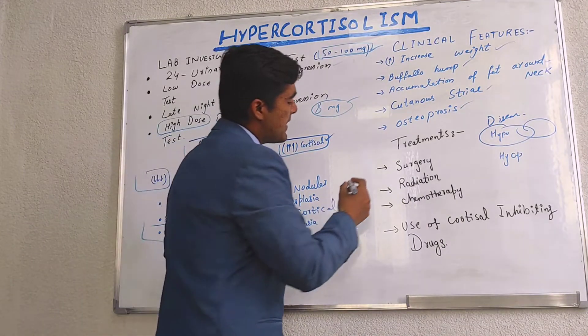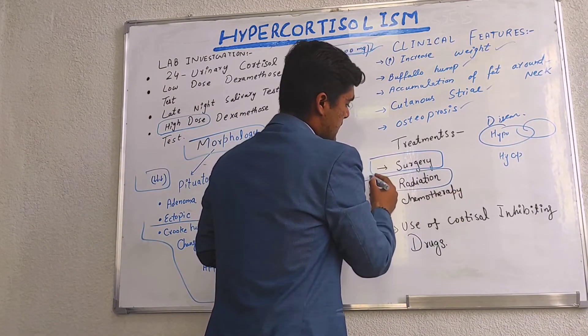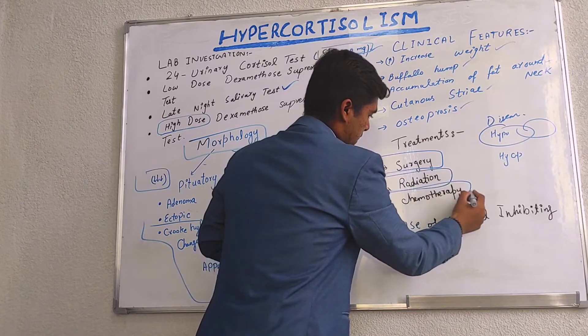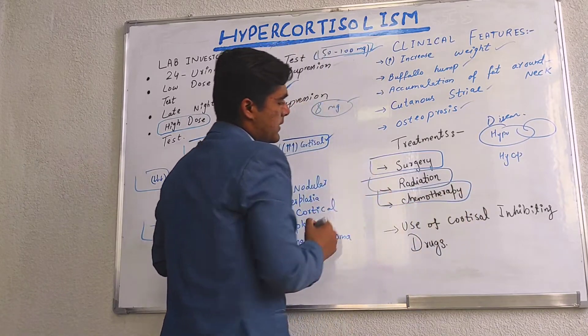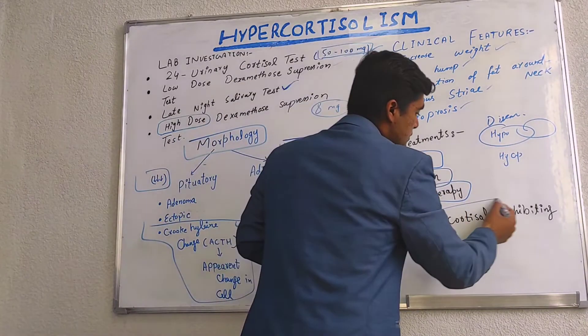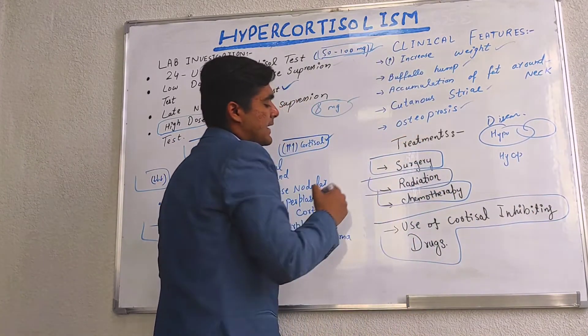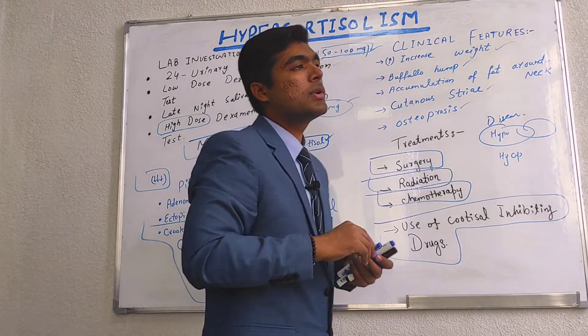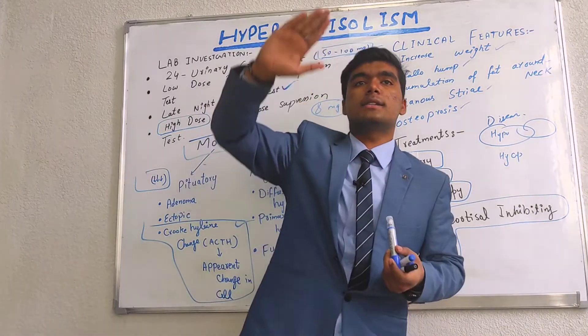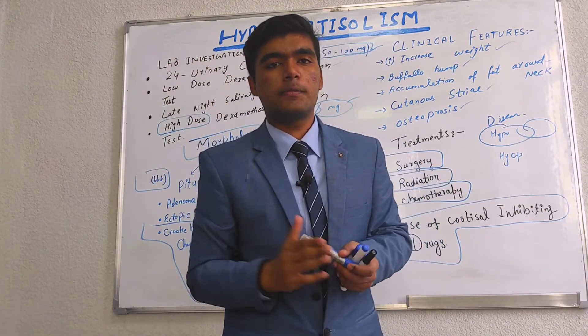Treatments include surgery, radiation, and chemotherapy in case of tumors, as well as cortisol-inhibiting drugs to suppress the elevated cortisol level in the body.